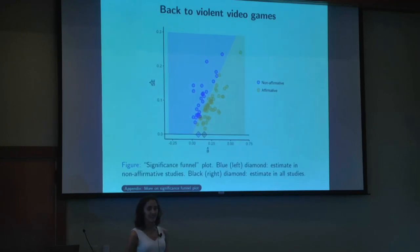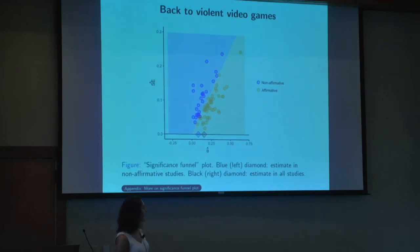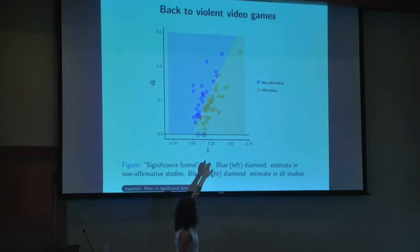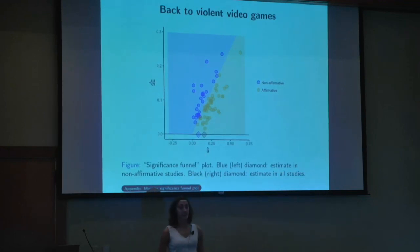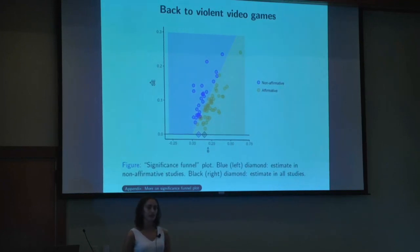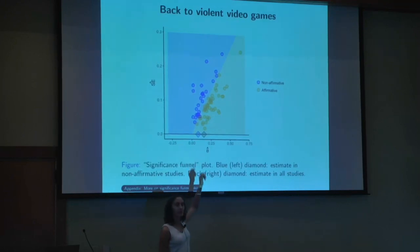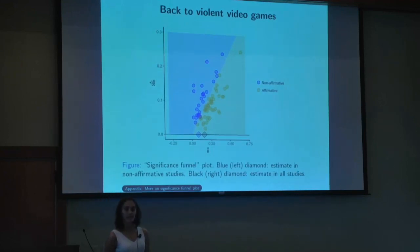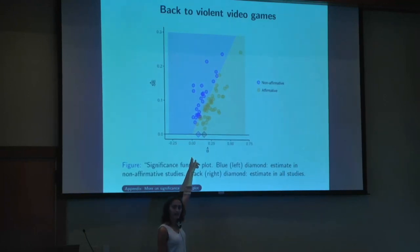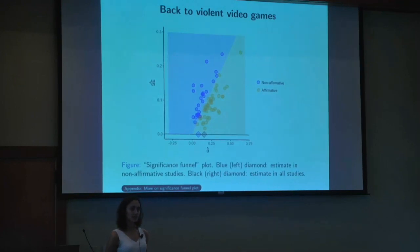Let's return to the violent video games example. Here's a funnel plot with studies color-coded as affirmative or non-affirmative, with two point estimates plotted above the x-axis. The diamond on the right is the naive estimate — just meta-analyzing all studies without addressing publication bias. The blue diamond on the left is the worst-case estimate: meta-analyzing only the non-affirmative studies. Interestingly, even this worst-case point estimate is still positive — smaller than the naive one, but still positive. So even under maximal publication bias, I still get a positive point estimate.